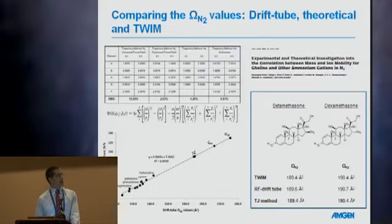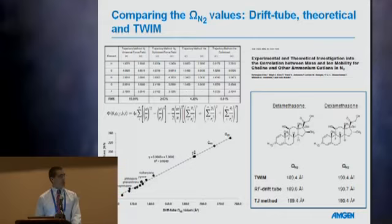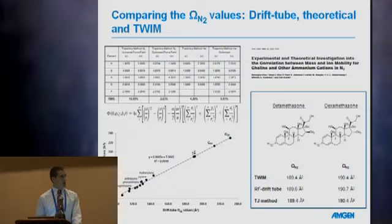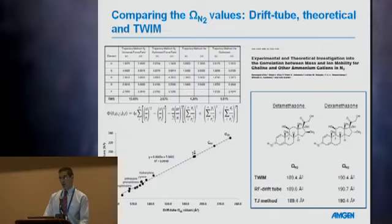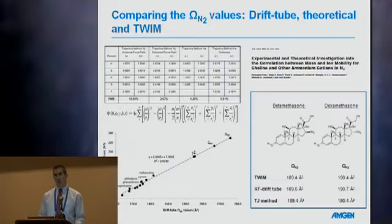Looking at a brief summary for beta-methasone and dexamethasone: the travelling wave-derived collision cross-section using our small molecule calibration routine gave 189.4, the RF drift tube in nitrogen gave 198.6, and the trajectory-based method gave 189.4. That's very good agreement between all three modes of deriving collision cross-sections — two instrumental and one theoretically derived. So not only is there now a helium-based trajectory method, there is also a nitrogen-based trajectory method for theoretical collision cross-sections of small molecules, and we've also used it to derive cross-sections on peptide radicals, which also correlate very well.